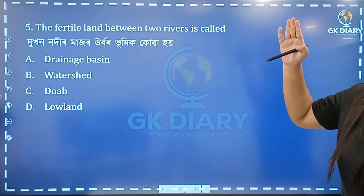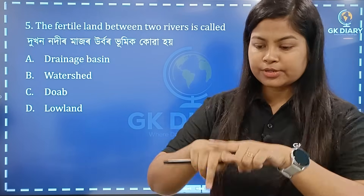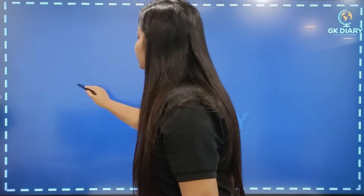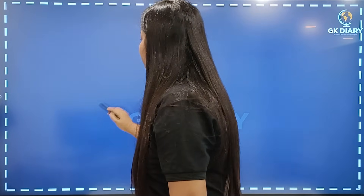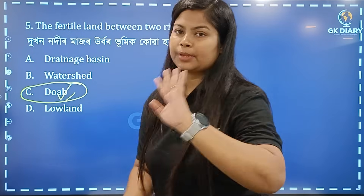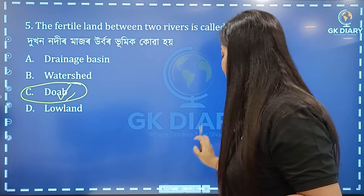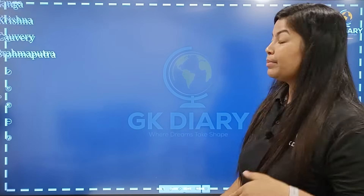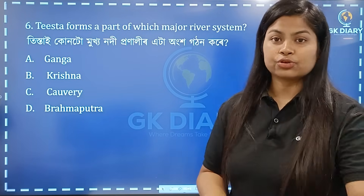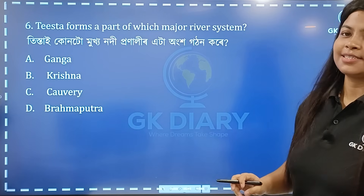Next: the fertile land between two rivers — this is the river system concept. In the third-grade exam, we have to prepare this question. The third-grade order is important. This is the river system.